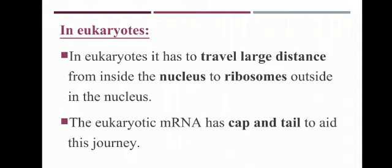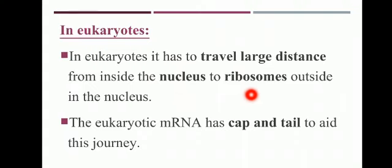In eukaryotes, the messenger RNA has to travel a large distance. This is because eukaryotes have a definite nucleus. As messenger RNA is formed inside the nucleus, it must move from the nucleus to the ribosomes, which are located in the cytoplasm. That is why it is said that in eukaryotes, messenger RNA has to travel a large distance.